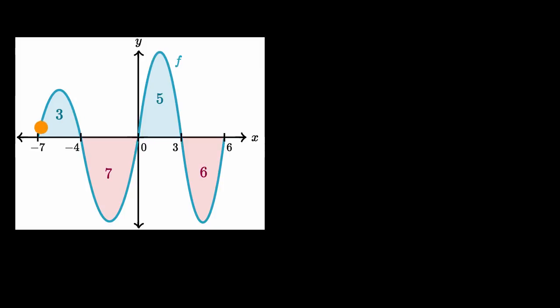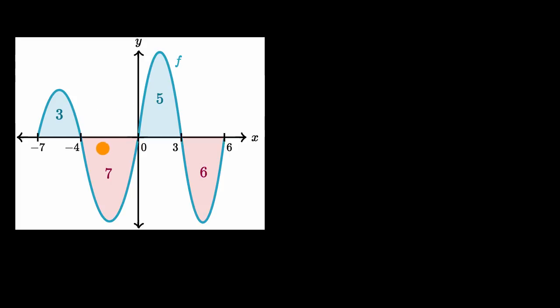What we have here is a graph of y equals f of x, and these numbers are the areas of these shaded regions — the regions between our curve and the x-axis. What we're going to do in this video is work through some examples of evaluating definite integrals using this information and some knowledge of definite integral properties.